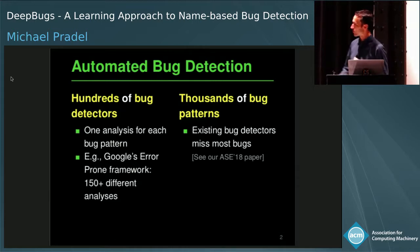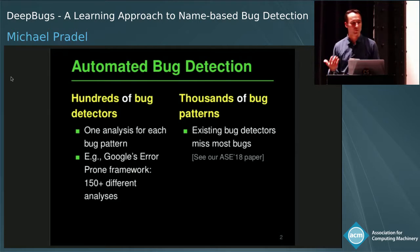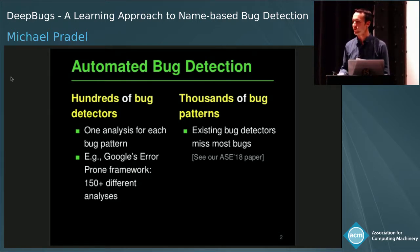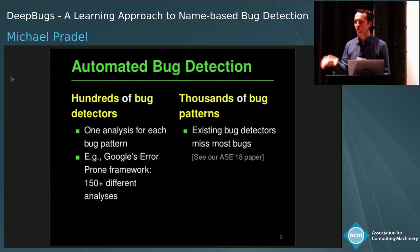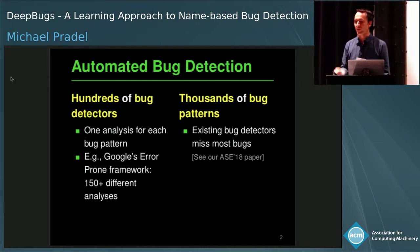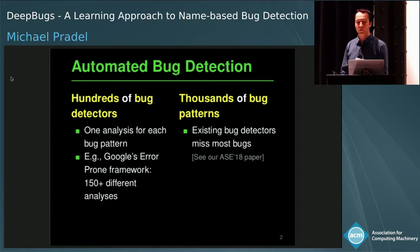The observation is that on one hand, we have by now hundreds of different bug detectors — very usable tools, for example Google Error Prone, that look at your source code and try to find bugs by looking for specific bug patterns. These tools are implemented as a framework, and on top of that you can implement checkers that each look for one particular bug pattern. Google Error Prone alone has more than 150 different analyses, each looking for a different bug pattern.